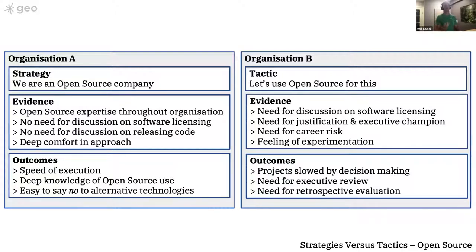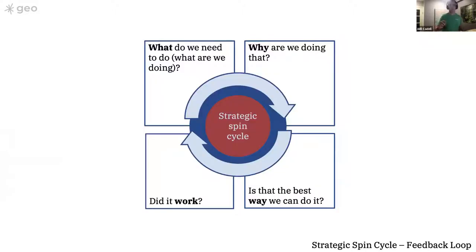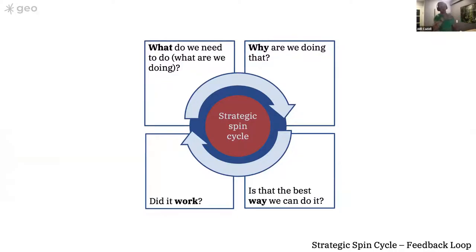That's when the real business benefits of a particular approach come to life. But you still need to be thinking about what you're doing, why you're doing it, and whether that was actually the best way — did it work? I think of this as a spin cycle — it's just a feedback loop. The important thing is: just because you've decided this is the direction you're going in doesn't mean it's always the right direction.